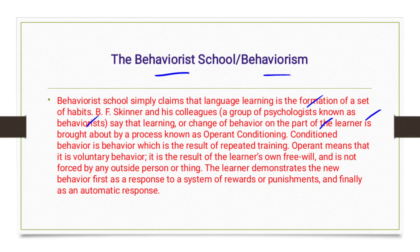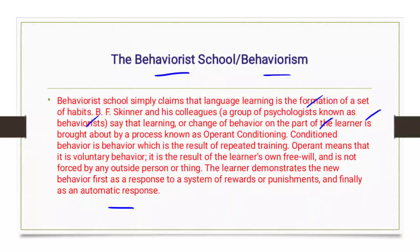The learner demonstrates new behavior first as a response to a system of rewards or punishments, and finally as an automatic response. The main things discussed in behaviorism are stimulus, reinforcement, and repetition. For example, if a child weeps, he or she wants milk — that condition is called a stimulus.